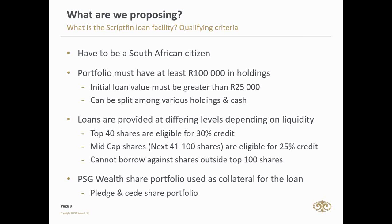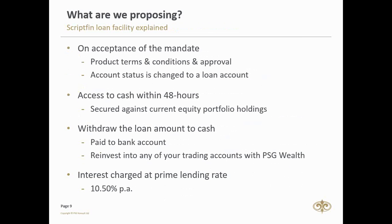Your share portfolio gets pledged and the shares are used as collateral for a loan. On acceptance of the mandate, the product terms and conditions, and credit approval, the account status is changed from a share portfolio to a loan account. You'll have access to that cash in your portfolio within 48 hours.